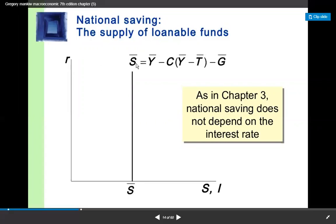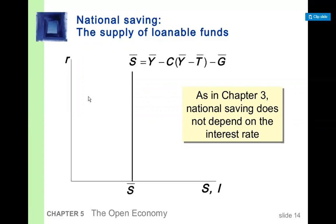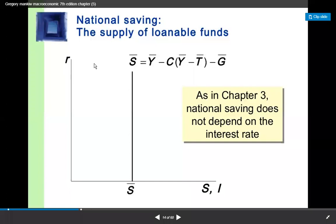Looking at the saving function diagram: the real interest rate is on the vertical axis, and saving — the supply of loanable funds — along with investment, is on the horizontal axis. In this diagram, saving is fixed at whatever the real interest rate is. Why is it fixed? Because income is fixed and government expenditure is fixed. If you have fixed income, the remaining saving will also be fixed — it does not depend upon the real interest rate.